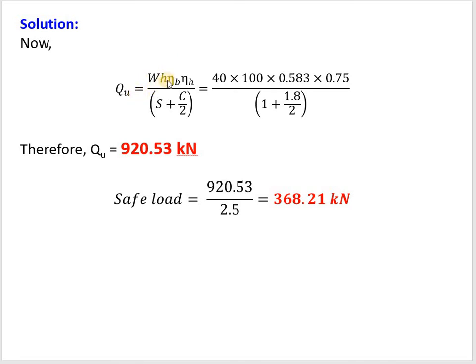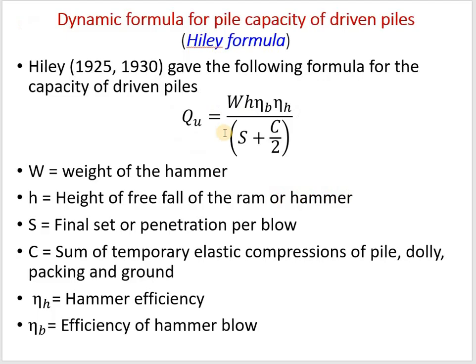Now apply the Hiley formula: Qu = (W × h × ηb × ηh) / (s + c/2) = (40 × 100 × 0.583 × 0.75) / (1 + 1.8/2) = 1749 / 1.9 = 920.53 kN. The safe load = Qu / FOS = 920.53 / 2.5 = 368.21 kN. This is an eight-mark problem; knowing the terminologies and the Hiley equation is sufficient to score full marks. In the next session, we will discuss group efficiency of piles, pile load test, and negative skin friction.